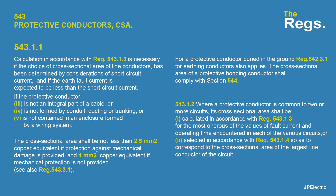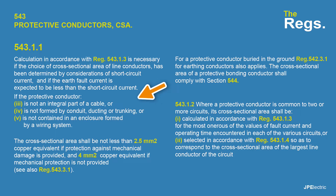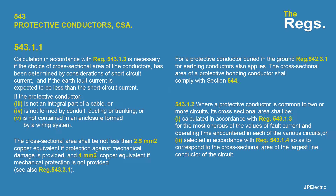The regs then go on to tell us when calculation is necessary, giving examples: if the protective conductor is not an integral part of a cable, it's not formed by a conduit, ducting or trunking, and it's not contained in an enclosure formed by a wiring system. It also tells us the minimum cross-sectional area in those circumstances, and what to do when a protective conductor is common to two or more circuits.